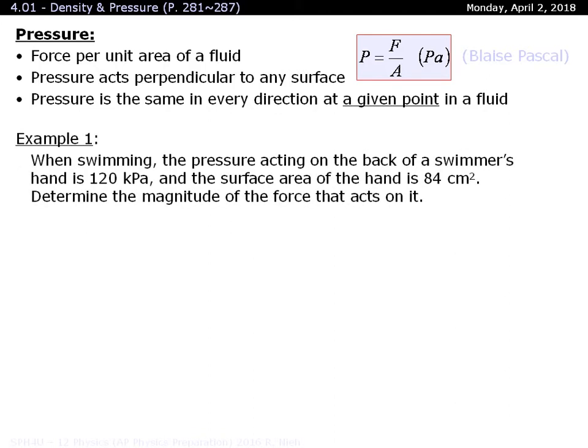Let's go through this numerical example. When you're swimming, the pressure acting on the swimmer's hand is roughly 120,000 Pascals. And the surface area of the hand is roughly 84 centimeters squared. Now we need to convert that centimeter squared into meter squared when we're solving it. Just keep in mind that there are 10,000 centimeters squared in one meter squared because now it's a two-dimensional measurement. So you have to multiply 100 centimeters by 100 centimeters to get 10,000 centimeters squared for every one meter squared.